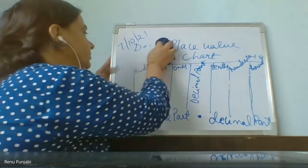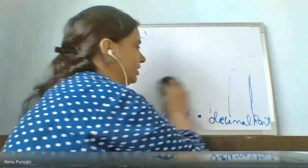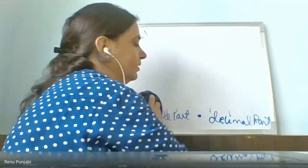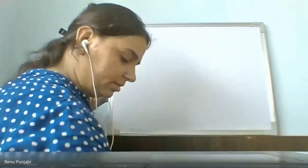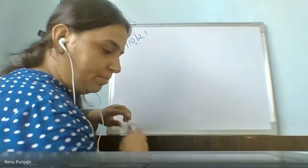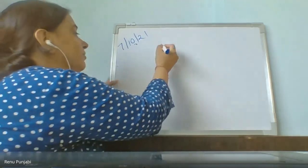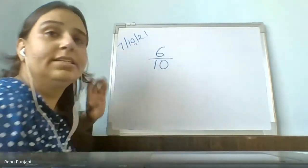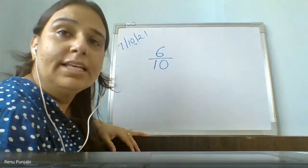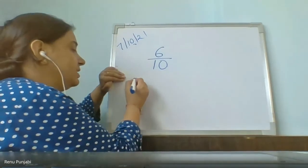Now you understood? Yes ma'am, very clearly. Now I will explain here on the board also. Suppose I give you this fraction: six upon ten. You have learned this. Now I tell you — convert this fraction into the decimal. Four students left the class — who are these four? Let me take the attendance for a minute.